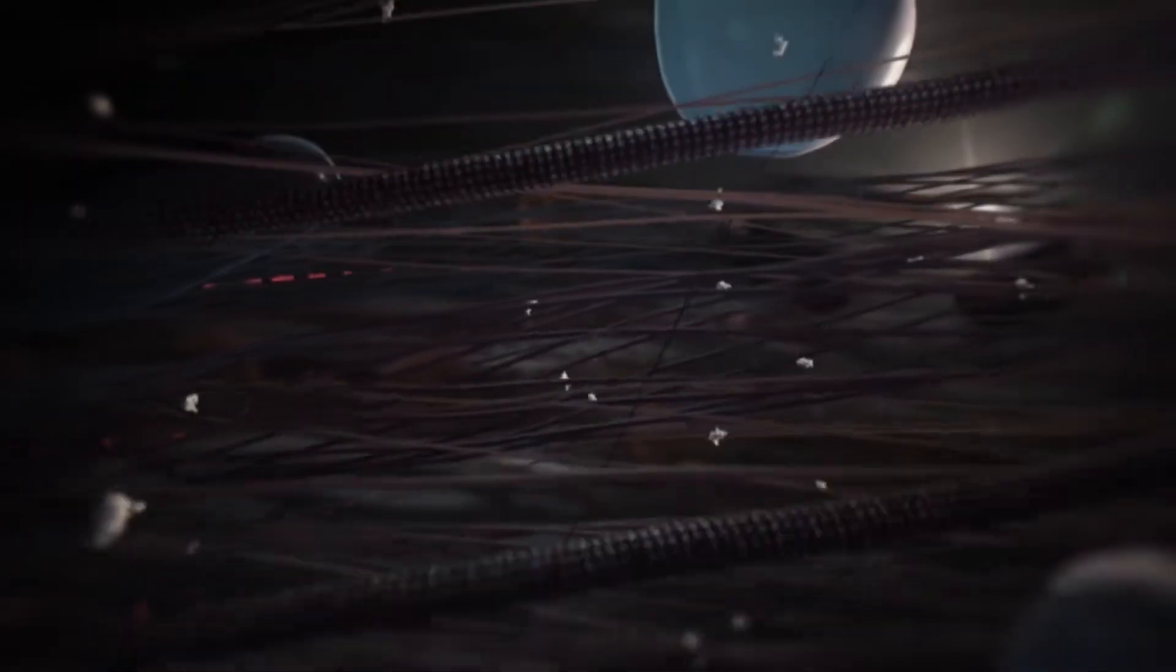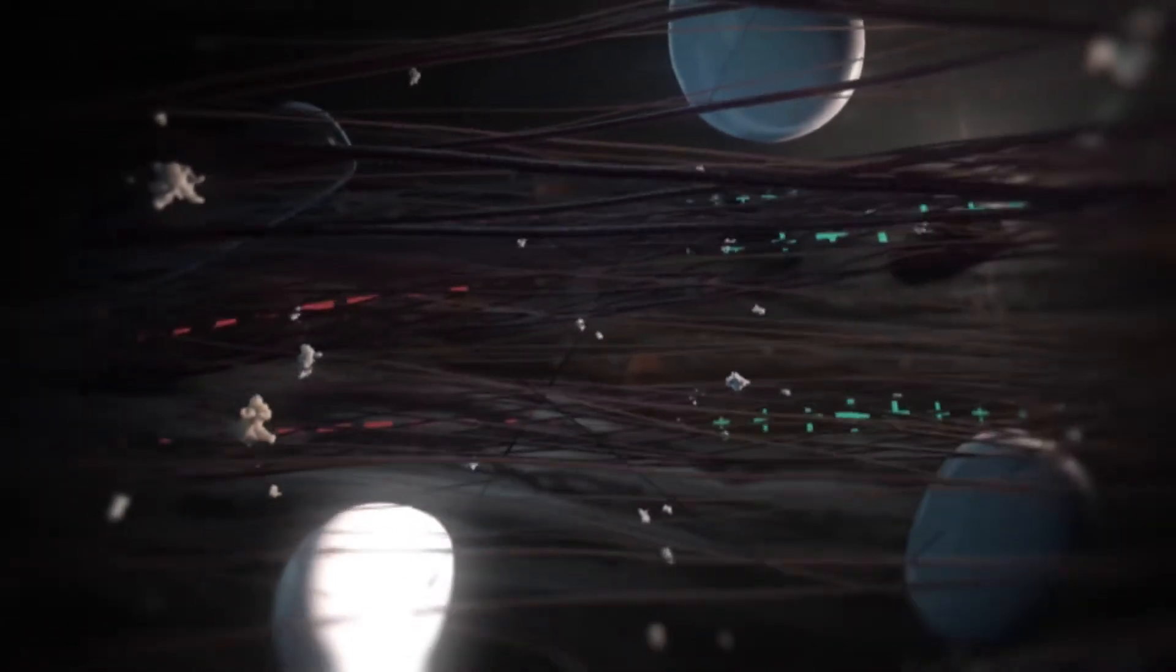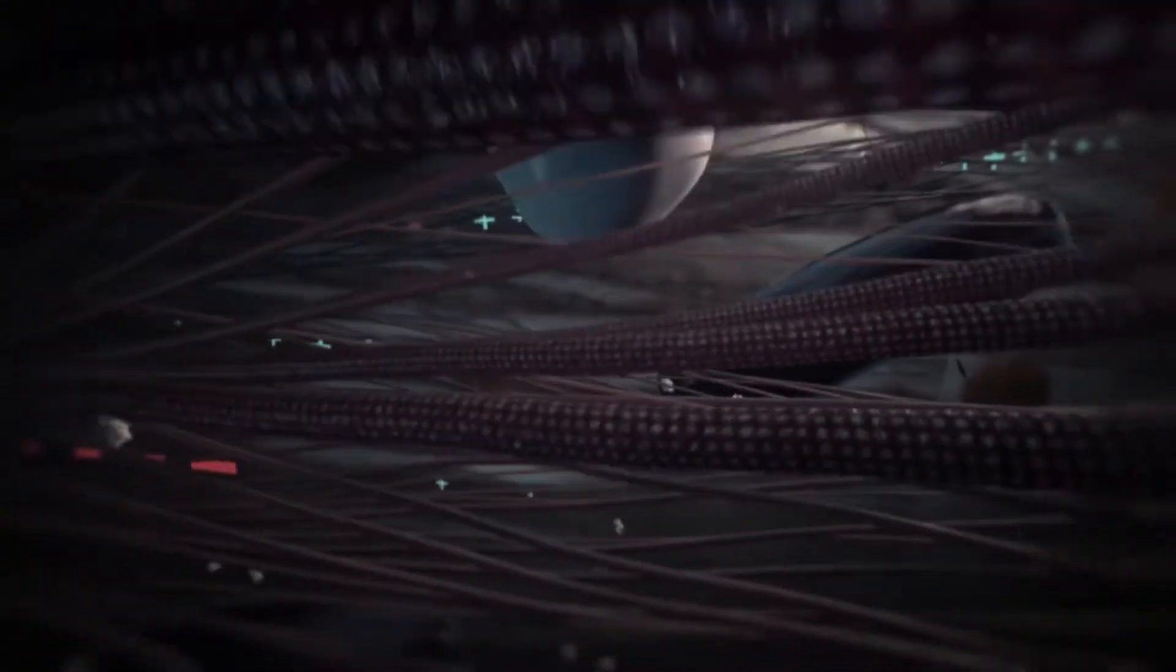In the axon, microtubules have a uniform plus-end-out orientation, whereas in dendrites, their polarity is mixed.